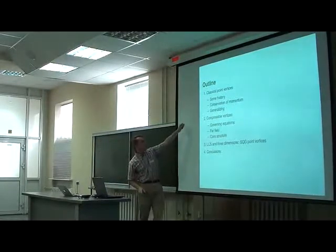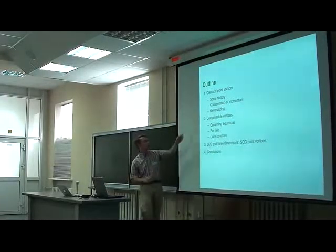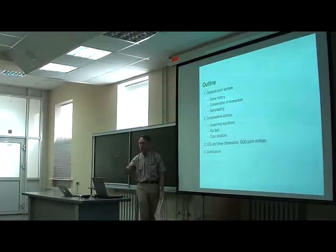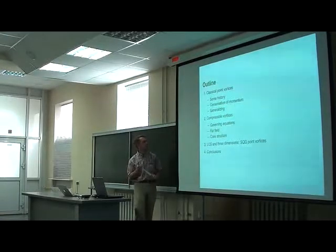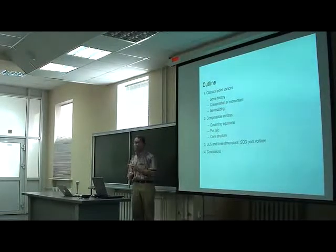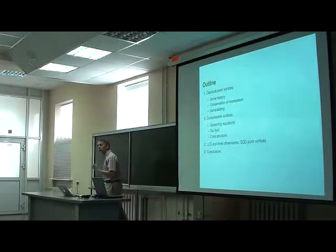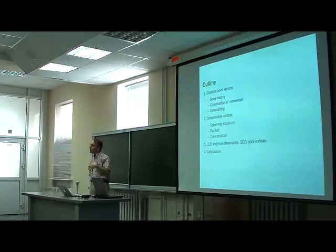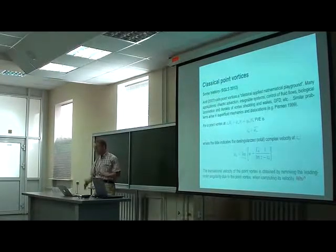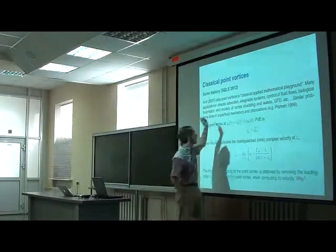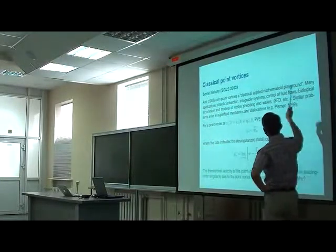So here we're going to talk about what you might call classical point vortices. Talk a bit about their history and momentum. And then how we might generalize. I'll discuss two main generalizations here. One is the effect of compressibility. And I'm particularly interested in that. And the other is a thing called SQG, surface quasi-geostrophy. The point vortices are still two-dimensional, but I care about the third dimension. Please ask questions. If we slow down, we just slow down.